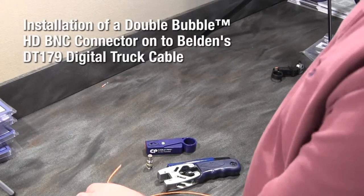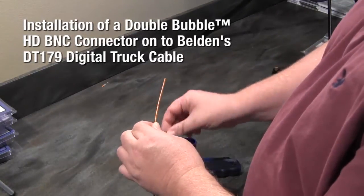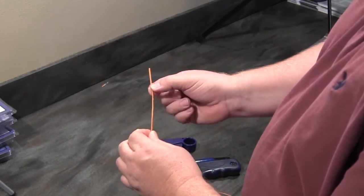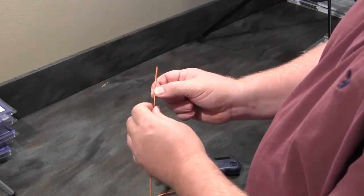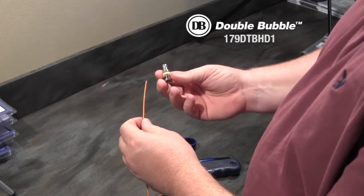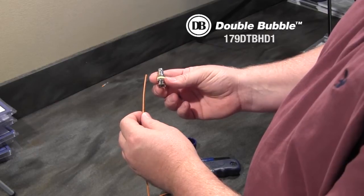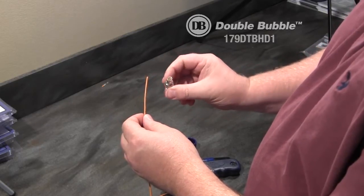In this video, I'll show the proper cable preparation and termination instructions for Belden's 179DT digital truck cable along with Belden's 179DTBHD1 one-piece compression BNC connector.